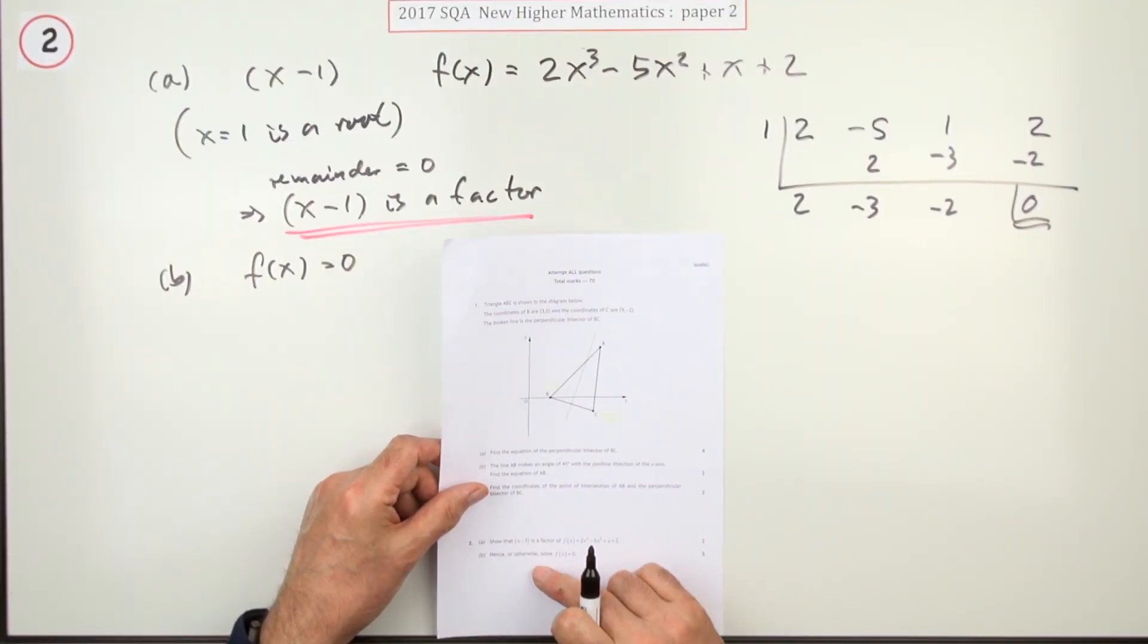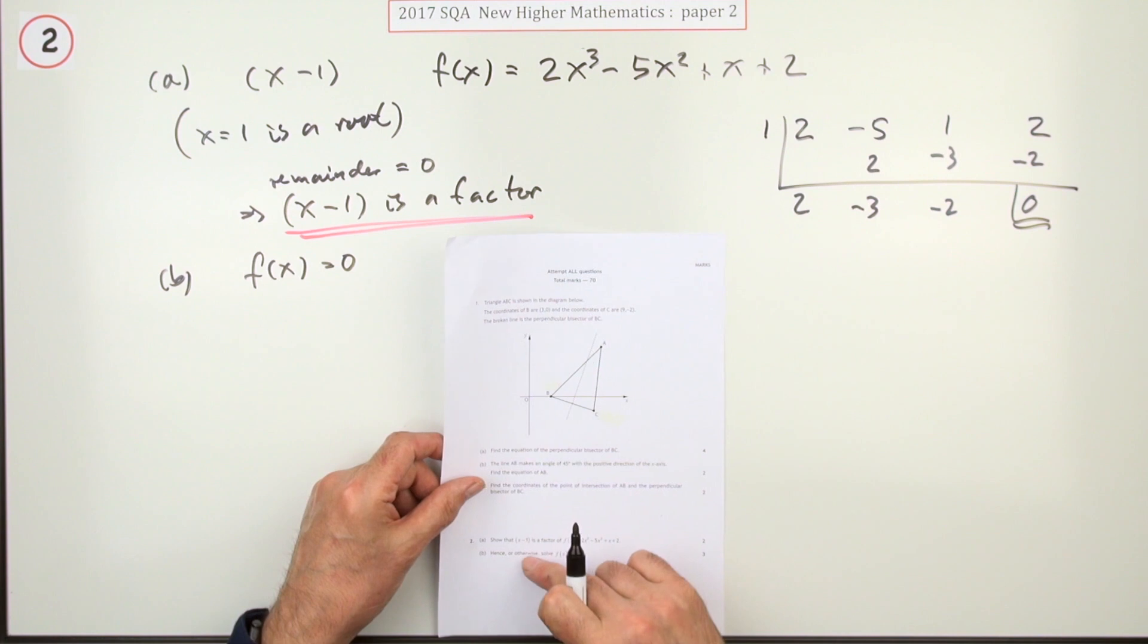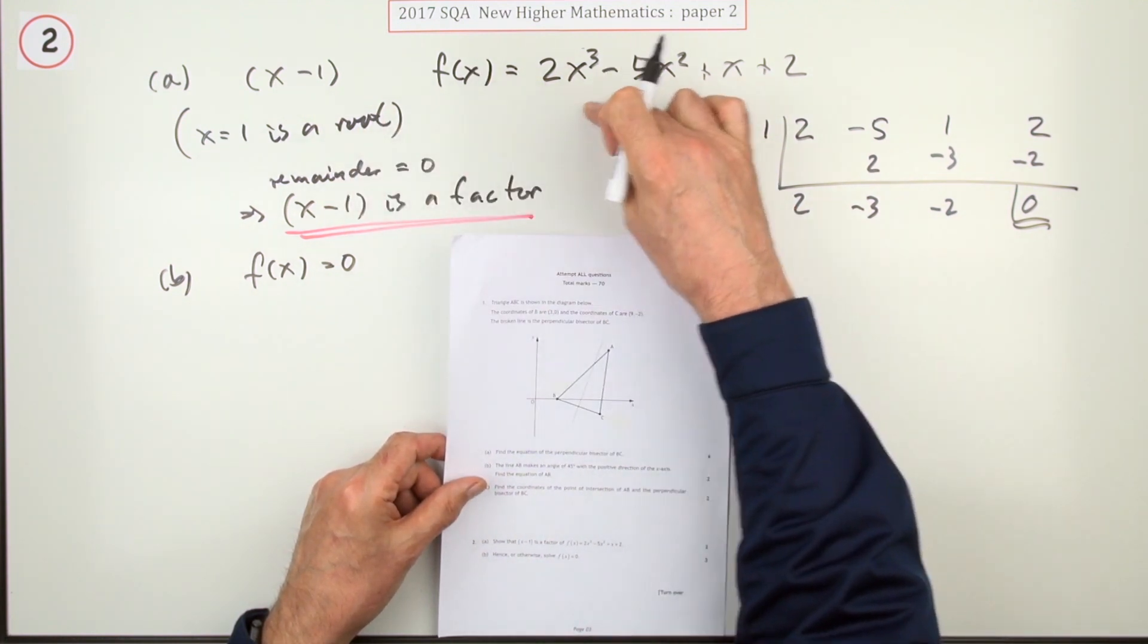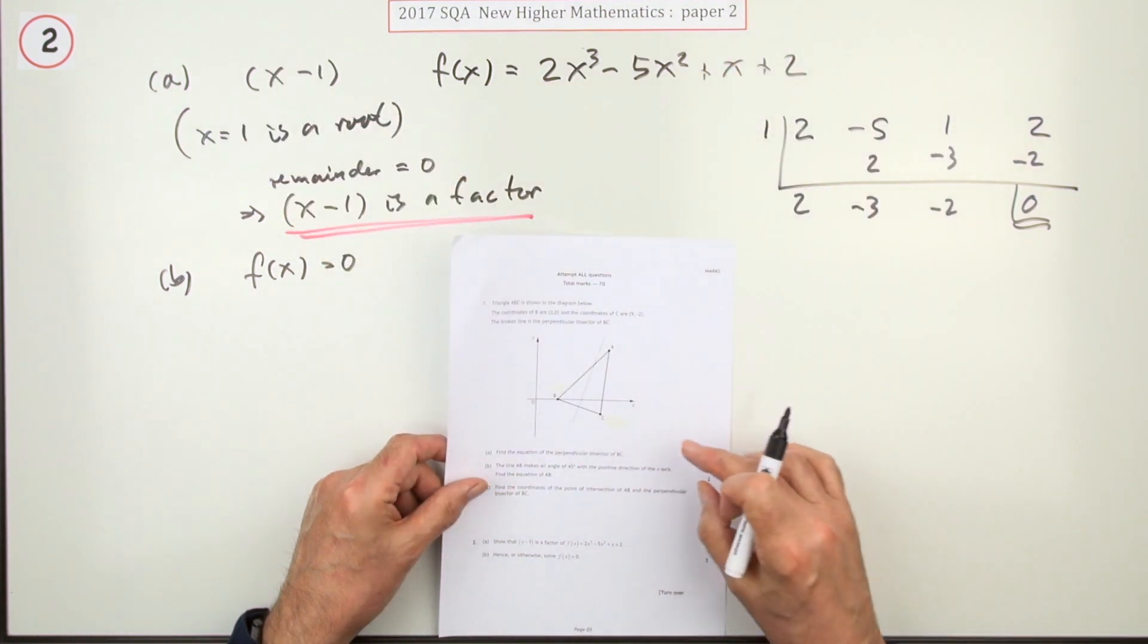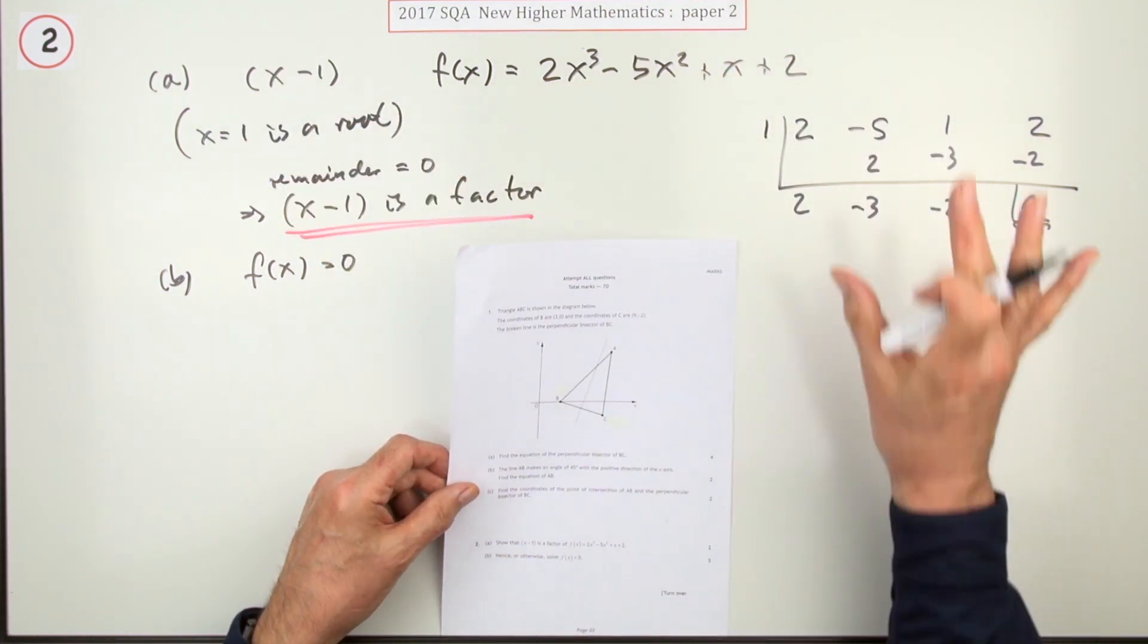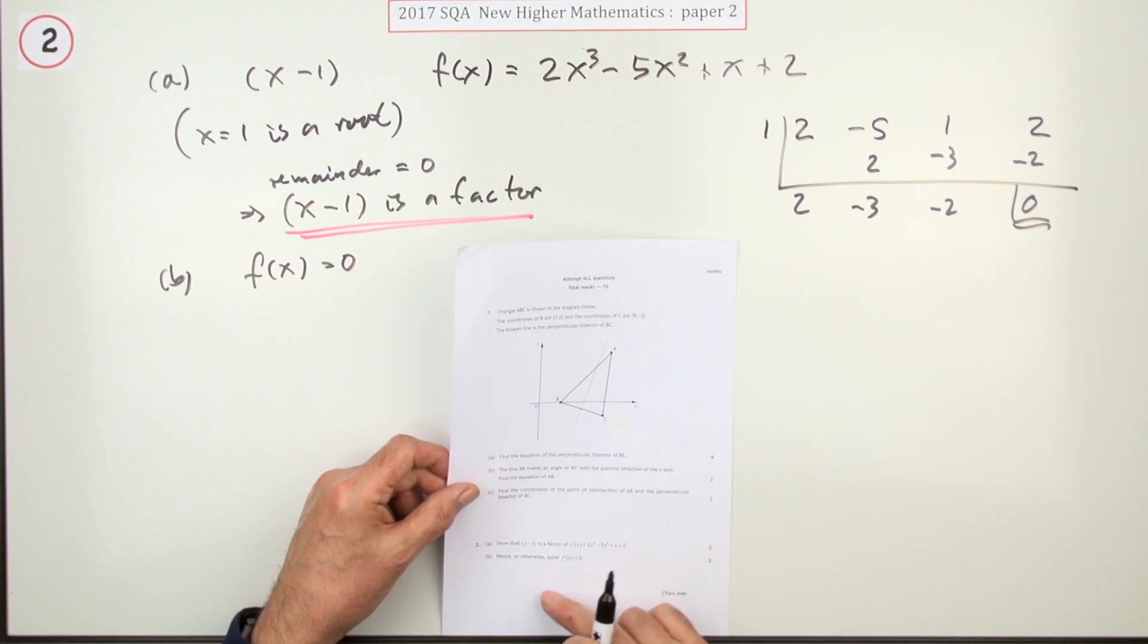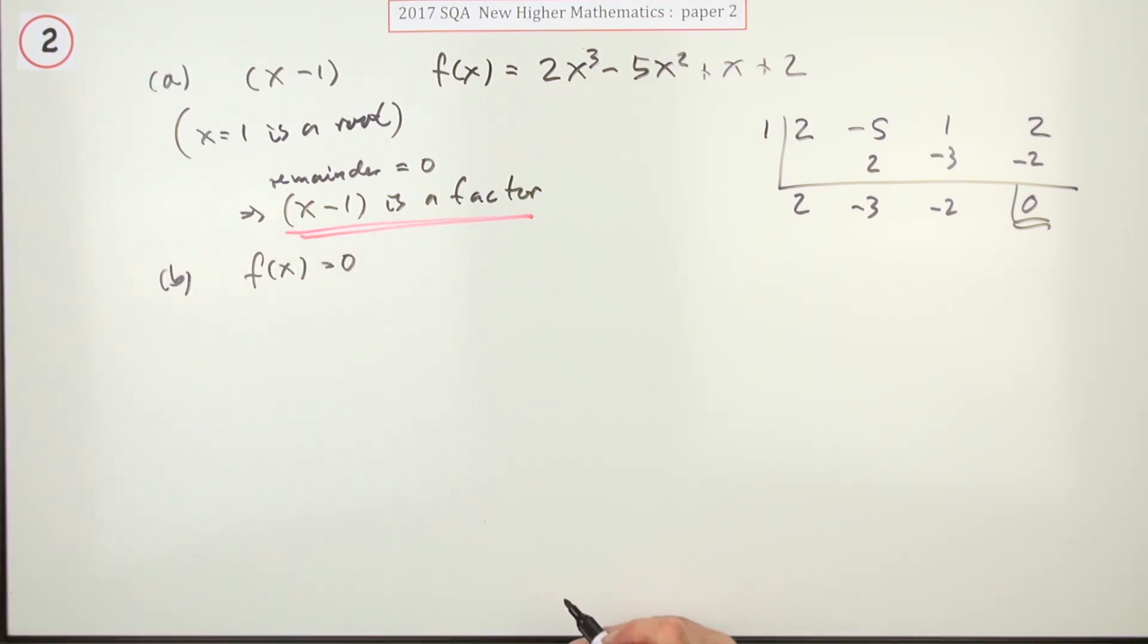Part b: hence or otherwise. Well, it would be hence, but it would be otherwise if you showed it was a factor by running one through this to show you got an answer of zero for x equals one being a root. But if you did it this way, then it's a hence.